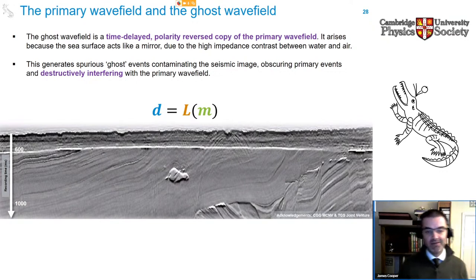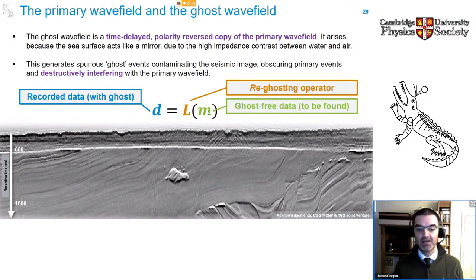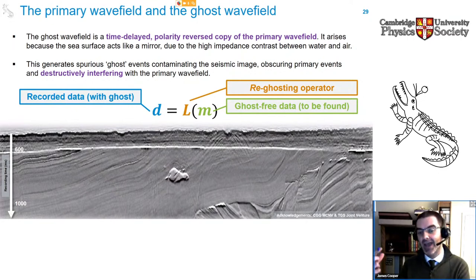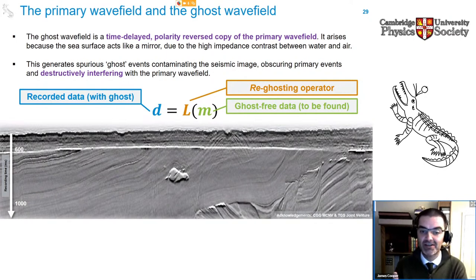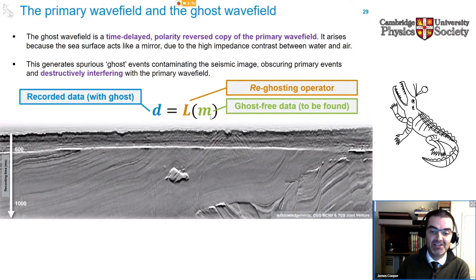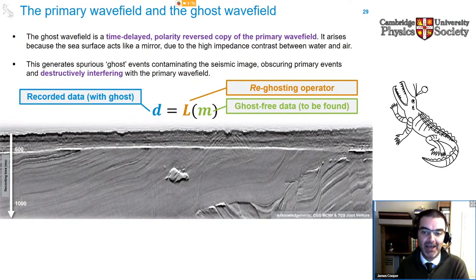Now let's talk about how we encode de-ghosting as an inversion problem. In the context of D = L(M): the recorded data D is the seismic data with the ghost in it; what we want — M — is the ghost-free data, the unknown to be found. By construction, L here can only be a re-ghosting operator: an operator which takes a data set and adds its ghost back into it. This introduces an important concept: the operator L does the opposite of what we actually want to achieve. We're looking to find a data set M such that when we add the ghost back into it, we recover the recorded data D. Defining a re-ghosting operator is much more straightforward than defining a de-ghosting operator — that's why it's useful to describe de-ghosting as an inverse problem.